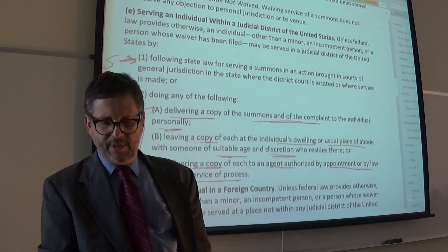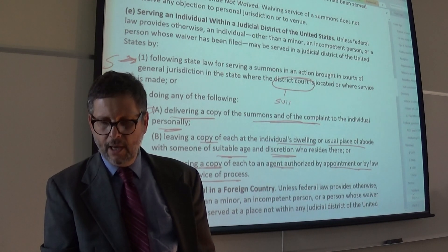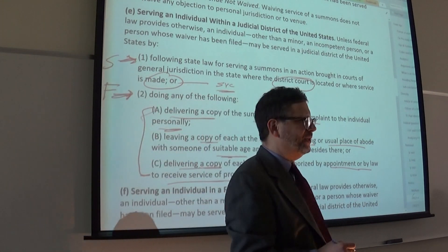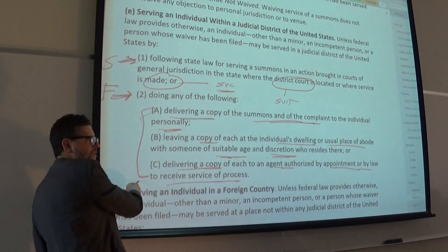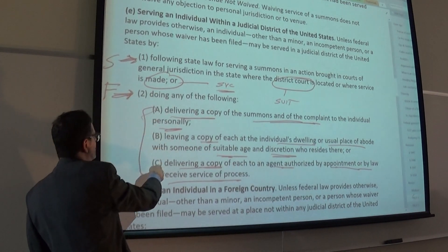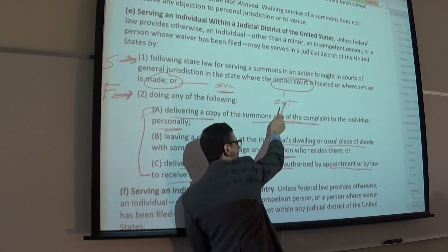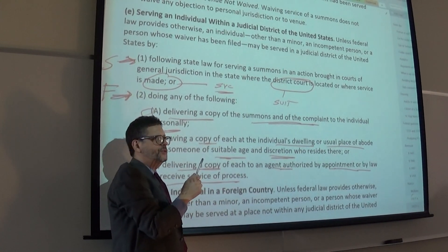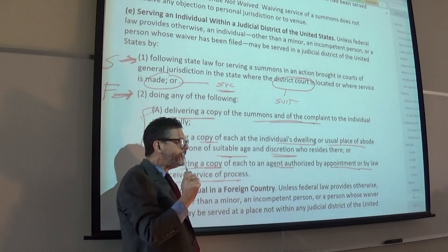Keep in mind that in federal court, we can also use state bases — specifically the state law for serving a summons, either in the place where the district court is located (the place of the suit) or where service is made (the place of service). For example, if you have a lawsuit filed in California in federal court and service is made in Florida, you can use any of the federal bases under 4E2 (A, B, and C), or under 4E1, you could use either the California service rules or the Florida service rules regarding that particular person. Any of them could be used.